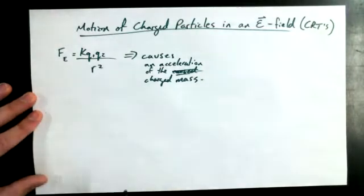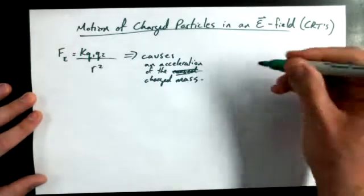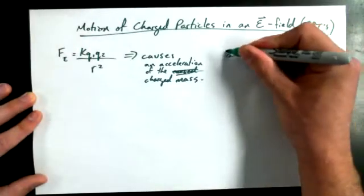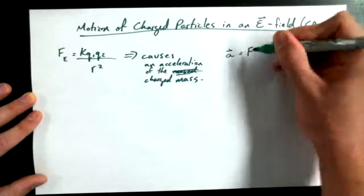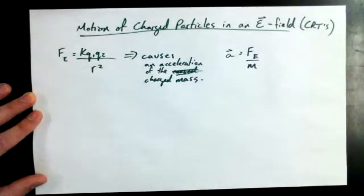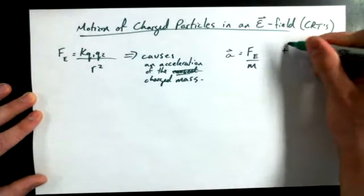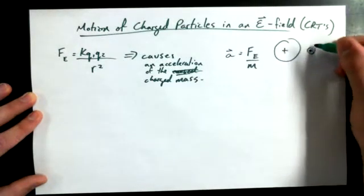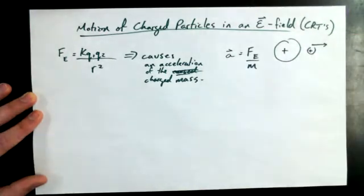But if they're both positive in this case, then maybe one's going to accelerate away. So we would say that acceleration of the moving charge would be equal to Fe over M. And you could say that if there's one really big charge and one little tiny charge, then the little tiny charge is going to accelerate away.